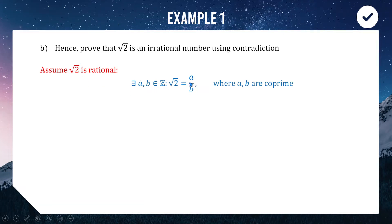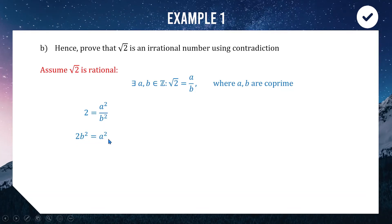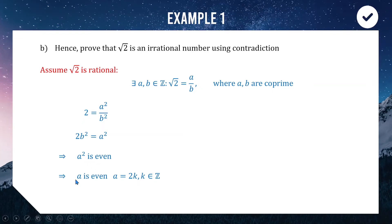This is the definition of a rational number — it can be written as a fraction of whole numbers. We say a and b are co-prime, meaning the fraction a/b is already fully simplified. Squaring both sides gives 2 = a²/b², and multiplying through gives 2b² = a². This tells us a² = 2 × something, so a² is even. From part A, if a² is even then a is also even — this property holds for any prime number.